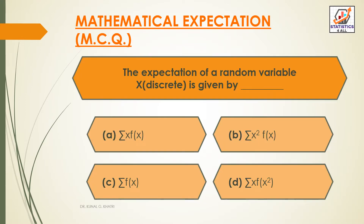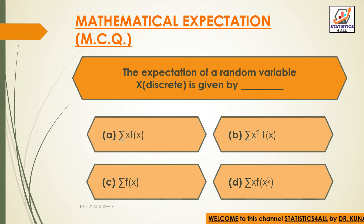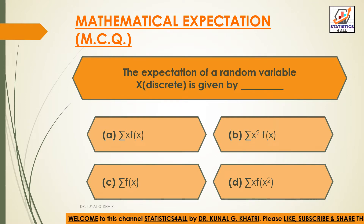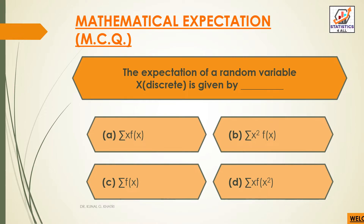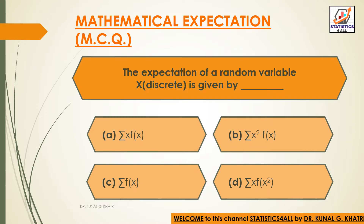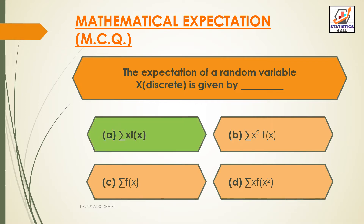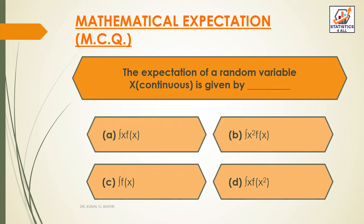The expectation of a random variable x that is discrete is given by: Option A — sum of x into f of x; Option B — sum of x square into f of x; Option C — sum of f(x); Option D — sum of x into f of x square. The answer is Option A: sum of x into f(x). The expectation of a discrete random variable x is given by the sum of x into f(x).